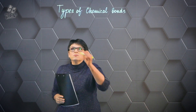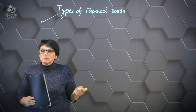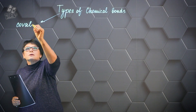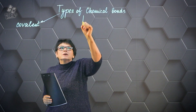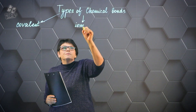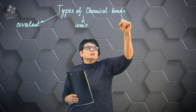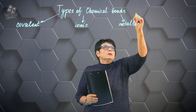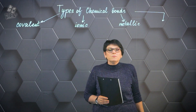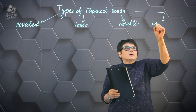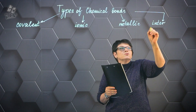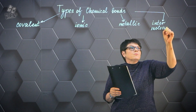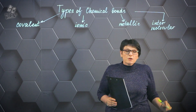Let us begin by pointing out what types of chemical bonds exist in general. A chemical bond can be covalent, ionic, metallic, or intermolecular. These bonds are also subdivided within themselves, and we're only going to look at one type of intermolecular bonding for now.